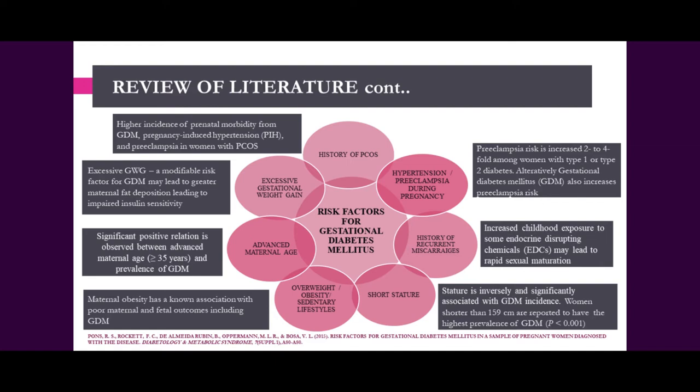The important risk factors are listed in this slide. Starting with the adolescent girl, there is a history of polycystic ovarian syndrome. A girl who has been suffering with polycystic ovarian syndrome has a higher incidence of developing gestational diabetes, with more prenatal morbidity from GDM, pregnancy-induced hypertension, and preeclampsia during pregnancy. Another important factor is excessive gestational weight gain — this is a modifiable risk factor with a greater effect because maternal fat deposition leads to impaired insulin sensitivity.